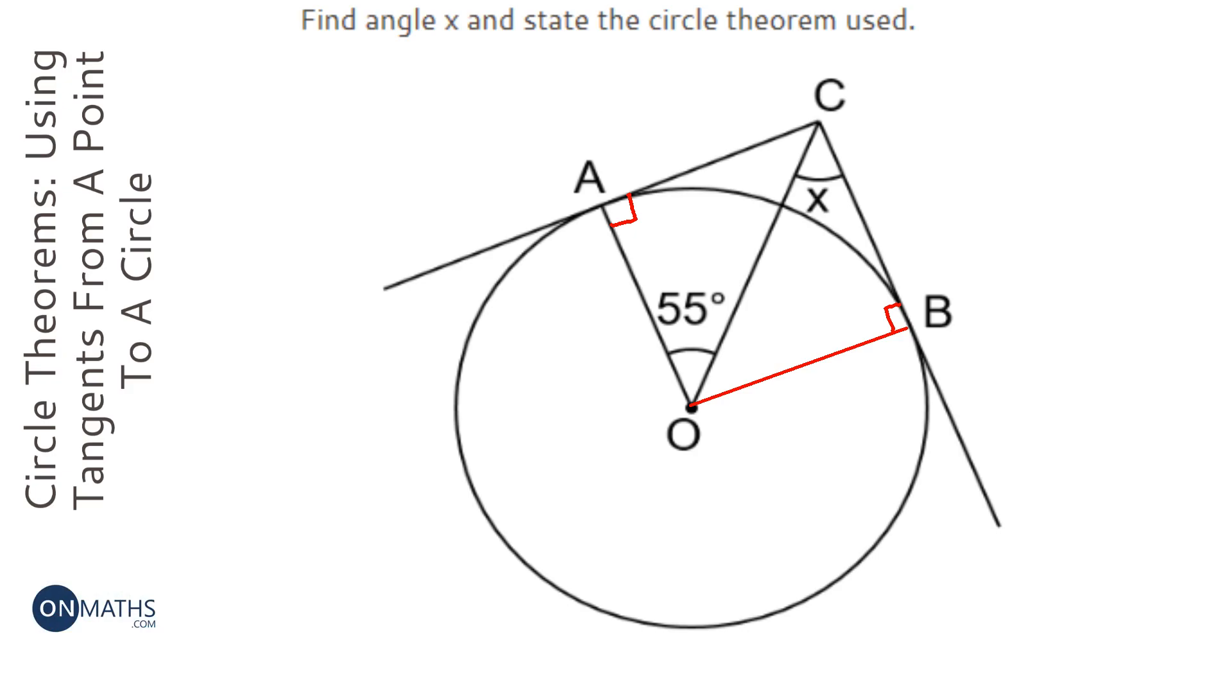The distance between where they touch each other, where they meet, and where they hit the circle is equal. So this is equal to this distance here. Therefore, the two triangles we have, the one on the left, triangle A, and triangle B, are going to be mathematically congruent.